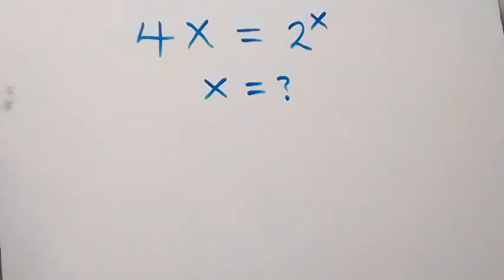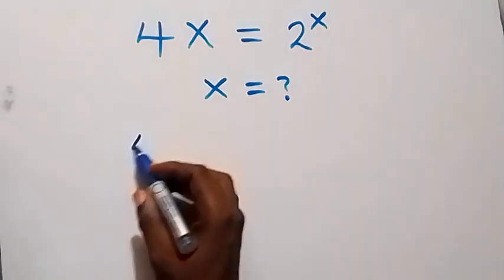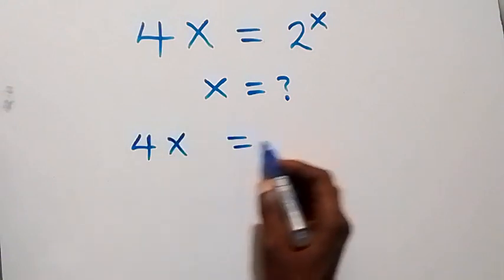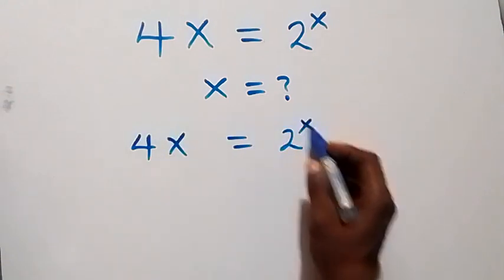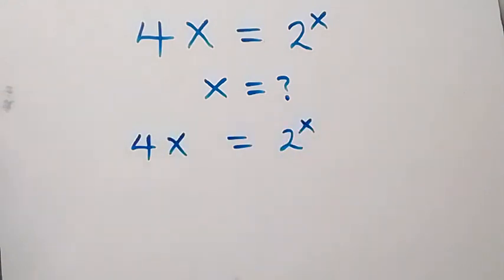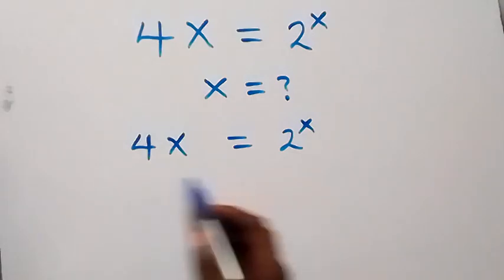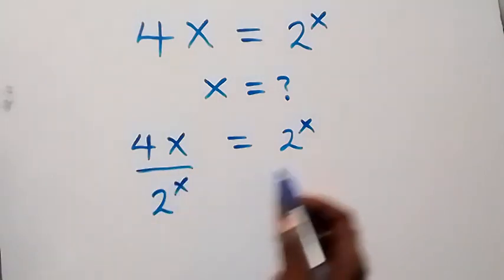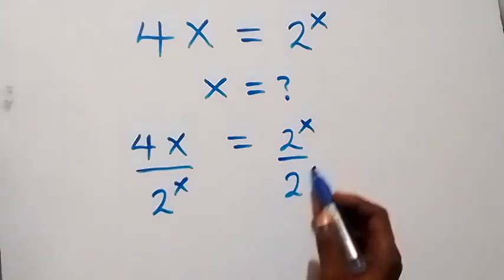Hello, you are welcome. How to solve for x in this nice math problem. From what is given here, which is 4x equals 2 raised to power x. From here, let's divide both sides by 2 raised to power x, and we have 2 raised to power x here and divide by 2 raised to power x here.